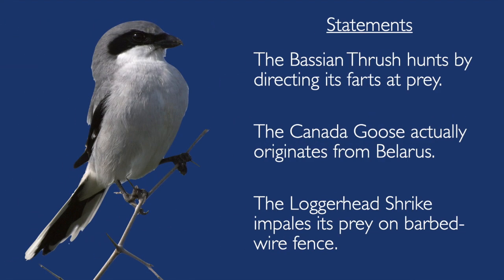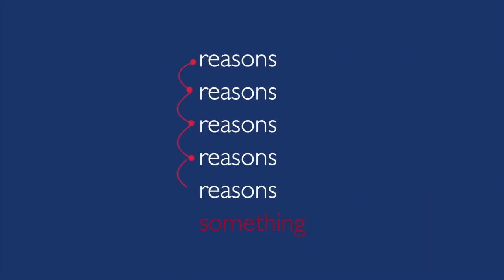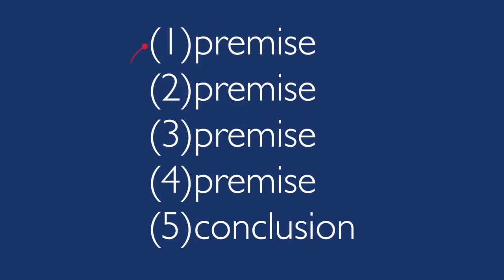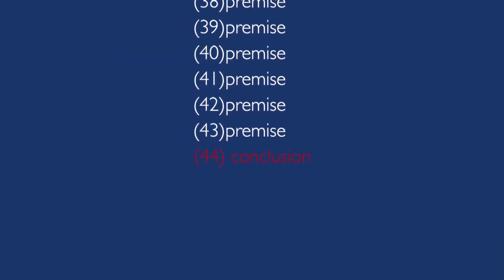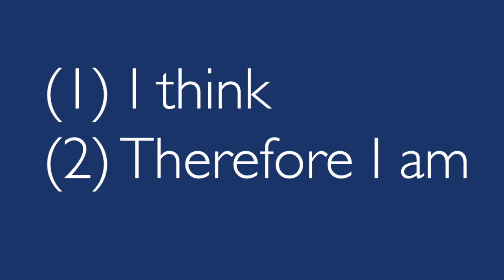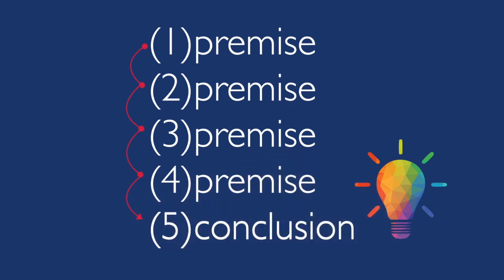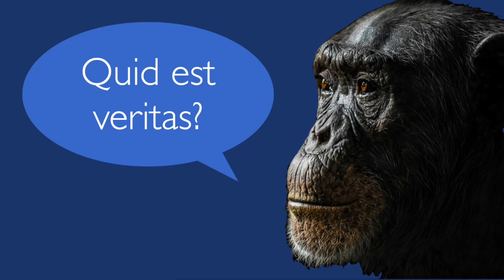An argument is made up of statements, but a mere list of facts is not an argument. An argument puts forward reasons for believing something. We call those reasons premises, and their job is to support the truth of the conclusion — they tell you why you should believe the conclusion is true. An argument is a group of statements: one will always be the conclusion, and the rest are premises offered as evidence.